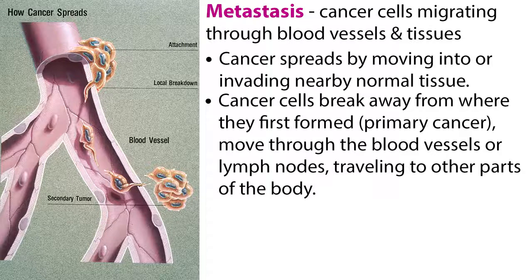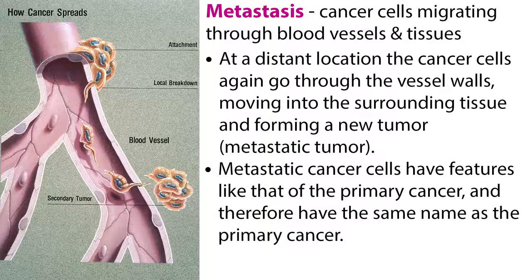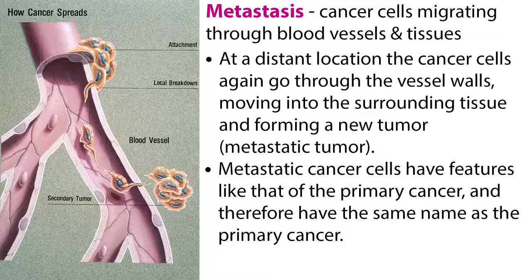Cancer cells do not serve any useful function, and they can migrate through blood vessels and tissues, spreading and growing in other body locations. This process is called metastasis and is the major cause of cancer death. Cancer can spread by moving into or invading nearby normal tissue. The cancer cells break away from where they first formed — the primary cancer — move through the blood vessels or lymph nodes, traveling to other parts of the body. At a distant location, the cancer cells again go through the vessel walls, moving into the surrounding tissue and forming a new tumor, the metastatic tumor. Metastatic cancer cells have features like that of the primary cancer and therefore have the same name. For example, breast cancer that spreads to the brain is called metastatic breast cancer, not brain cancer.